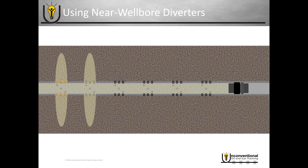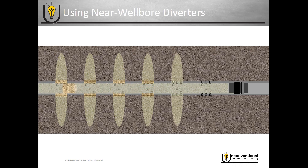So once you've placed your frack stage that corresponds to the second cluster, you pump another set of diverters. That blocks off the near wellbore of that cluster and forces the fluid to divert into another cluster. Then you just repeat that process — pumping another diverter down, forcing that fluid into another cluster, until you're finished fracturing that stage. Now once you're finished fracturing, these diverters are made of a degradable material, so they will dissolve. Then you can produce through those perforations and regain your access to the formation.